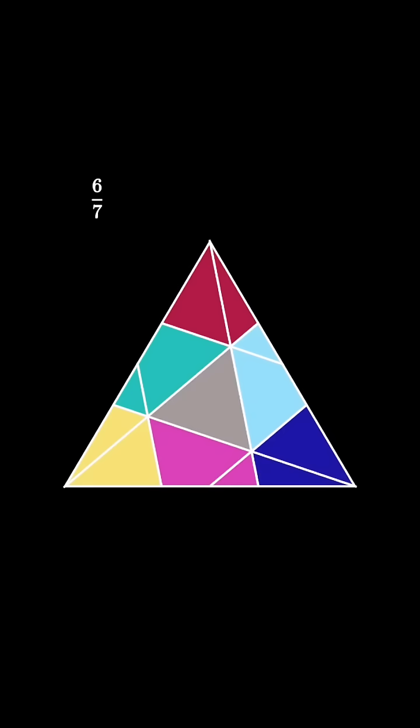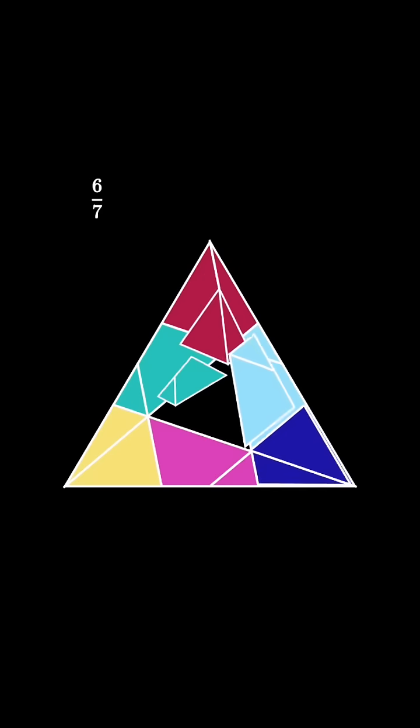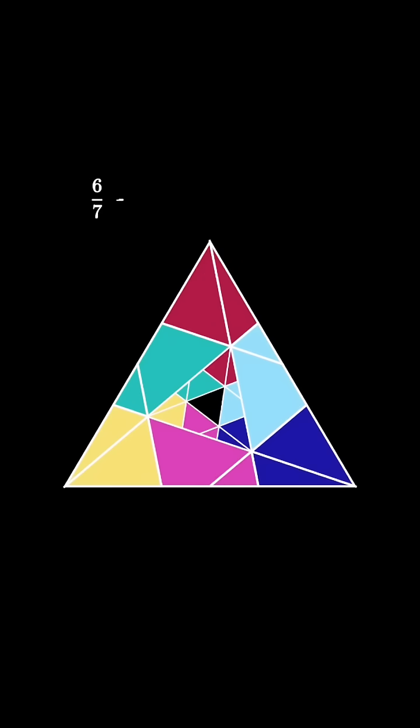The center triangle is therefore 1 7th of the area of the original. We can repeat this process on the inner 1 7th, shading 6 7ths of 1 7th, so shading 6 of 7 squared.